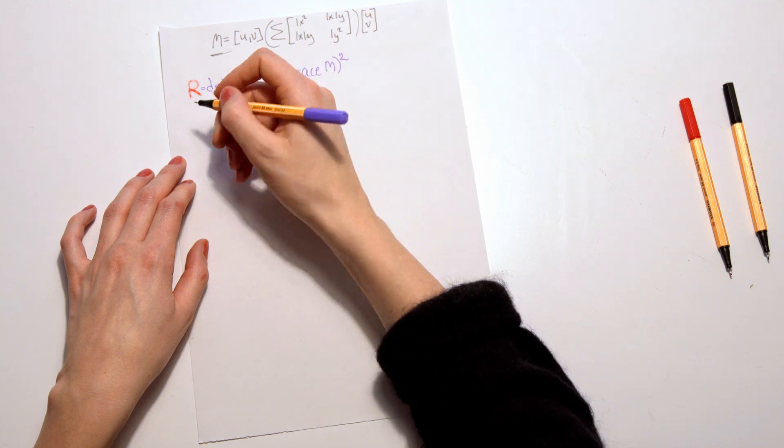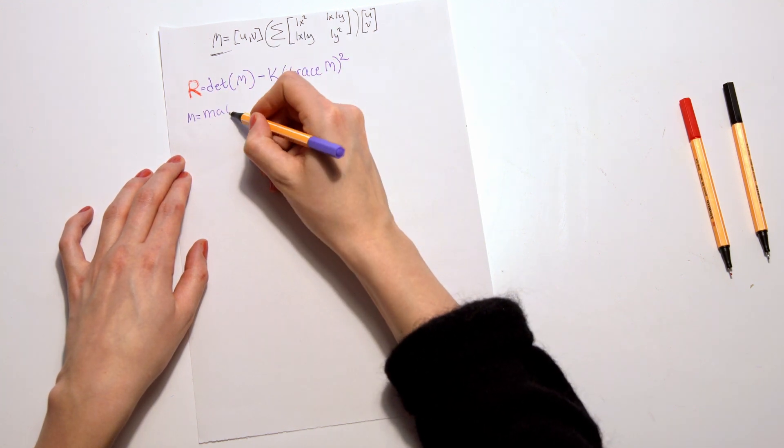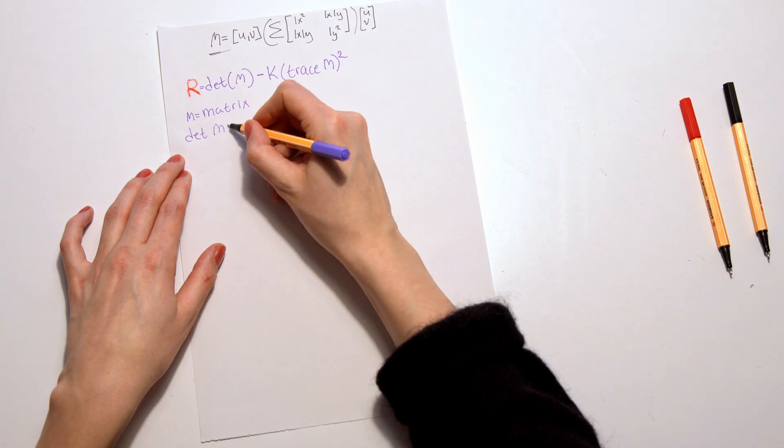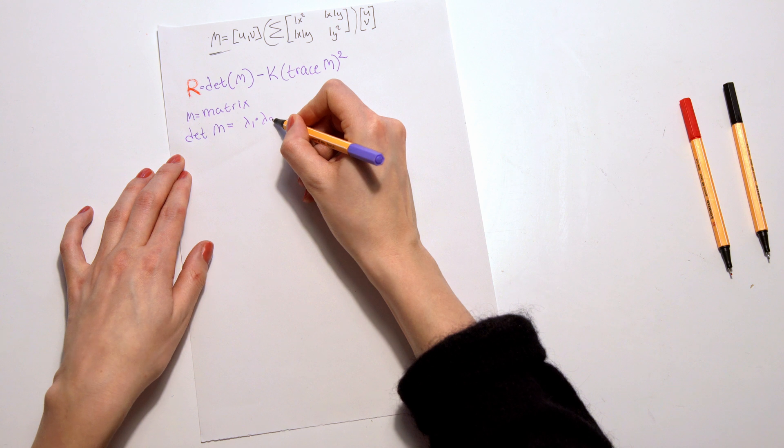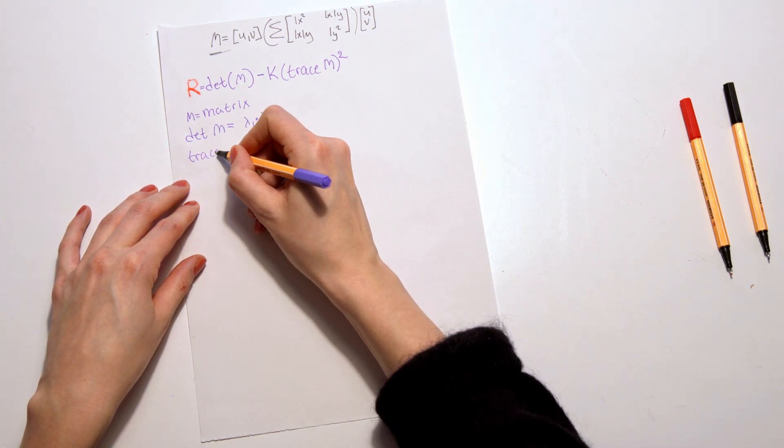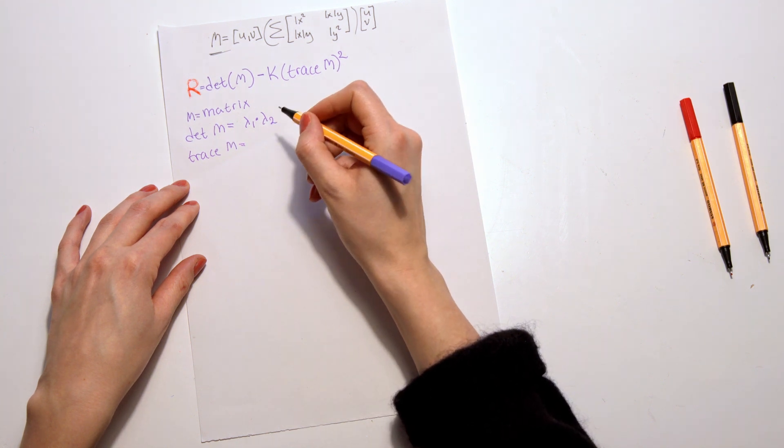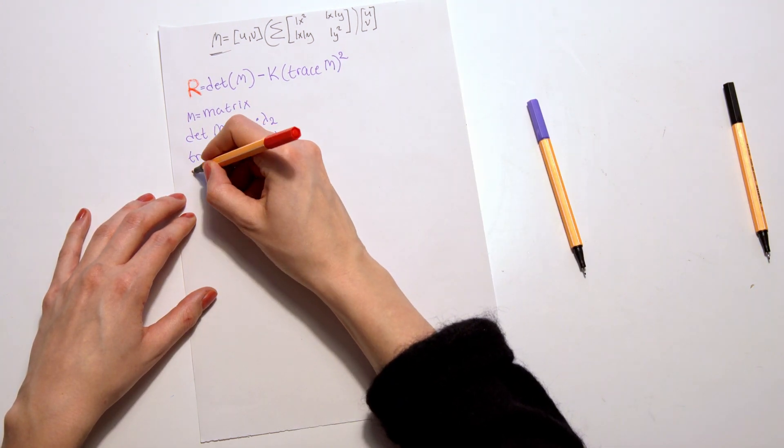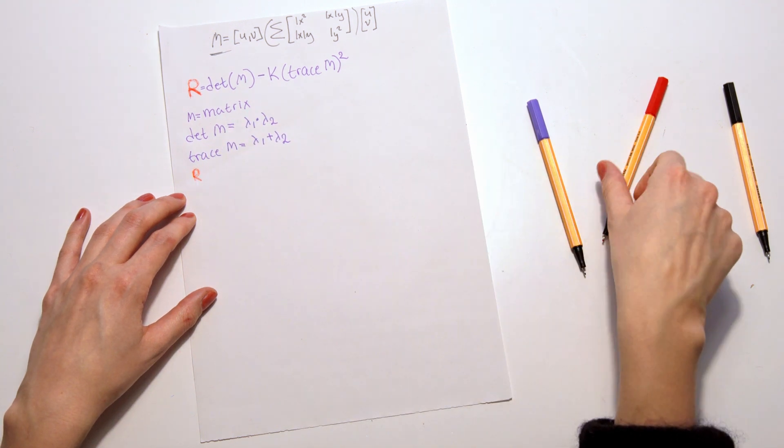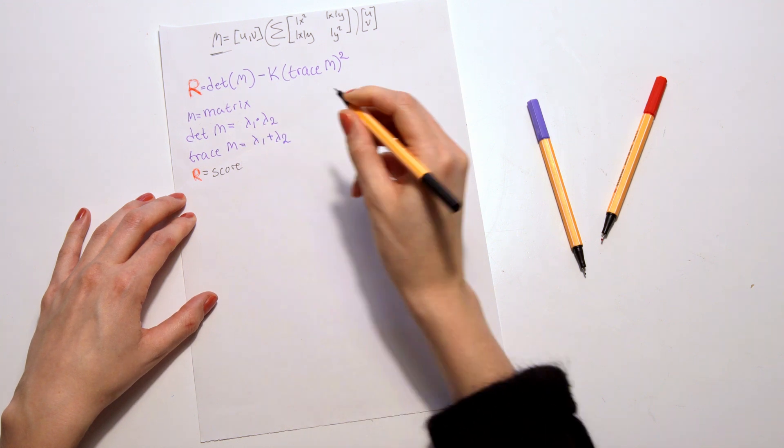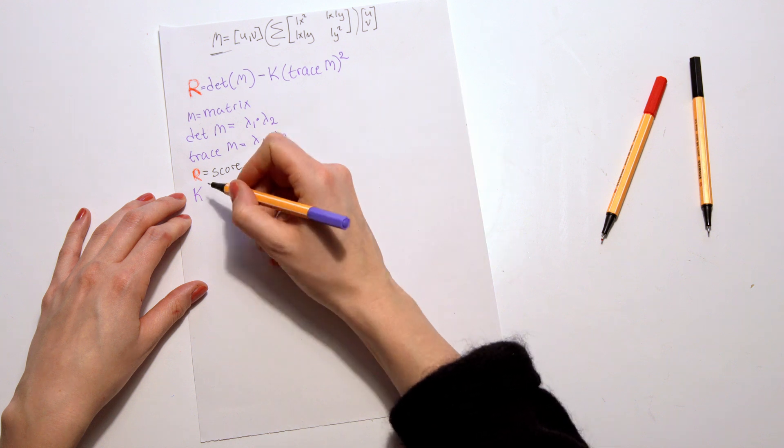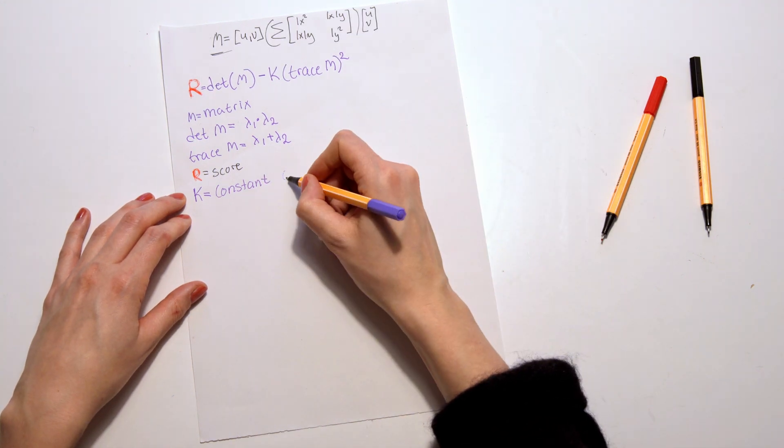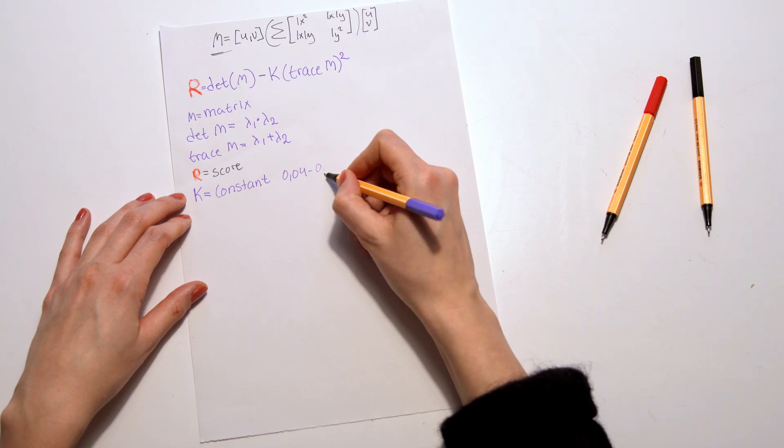So to be clear, M is our matrix. The determinant of M is basically lambda 1 times lambda 2. The trace of M equals lambda 1 plus lambda 2. And then R is basically just a score, and K is a constant.